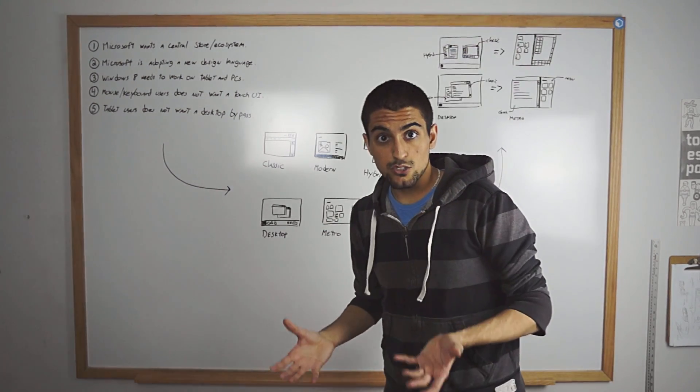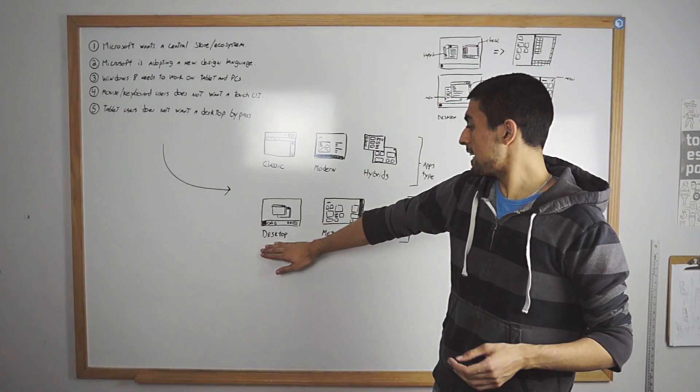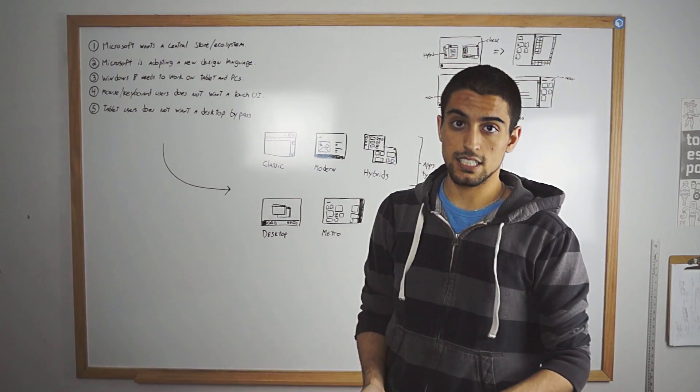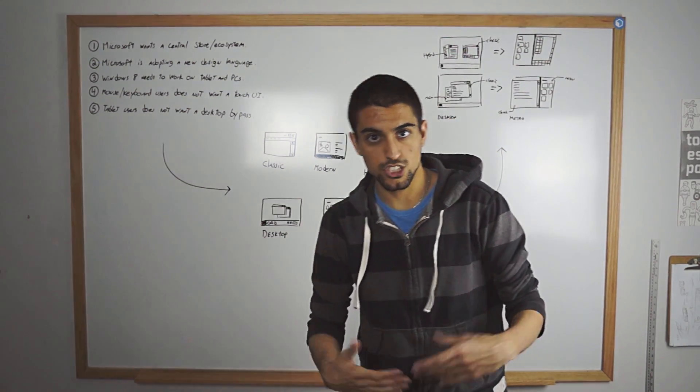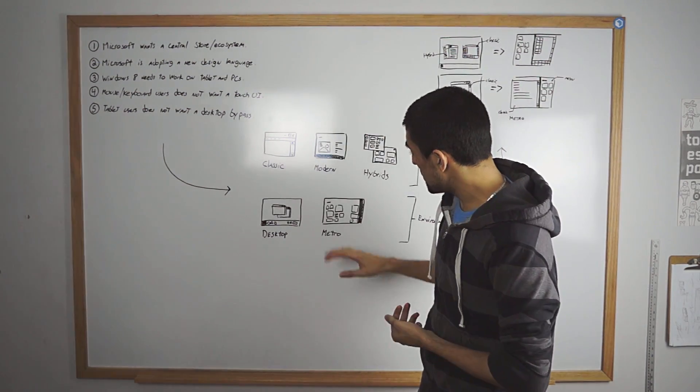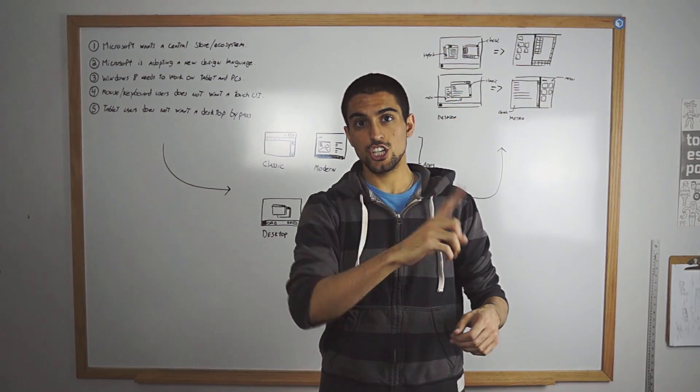Speaking of environments, right now we're having two of them. We have the desktop, this is Windows 7 basically. So yes, the desktop is just Windows 7. And then we have the Metro environment which is the touch start screen.